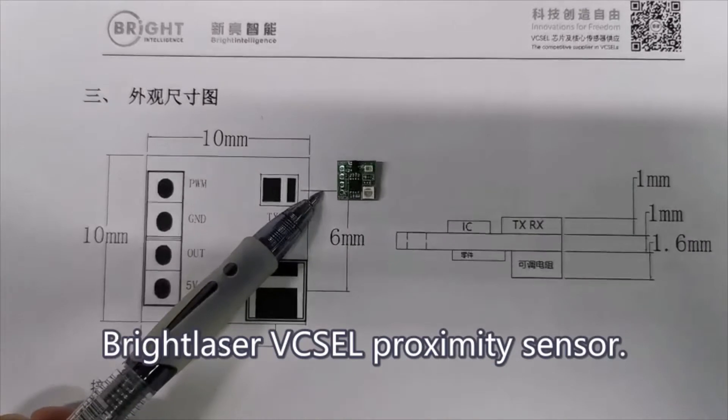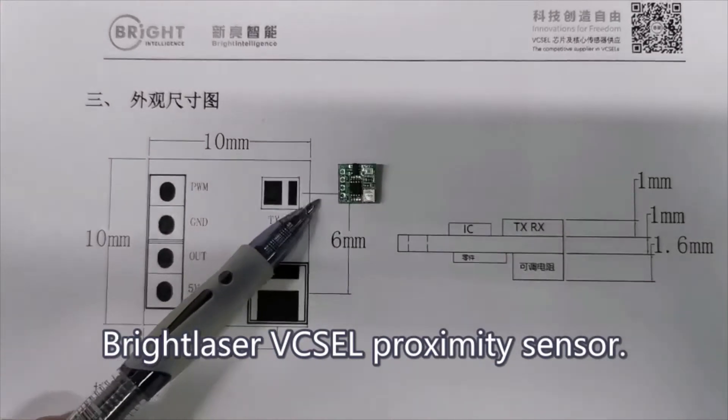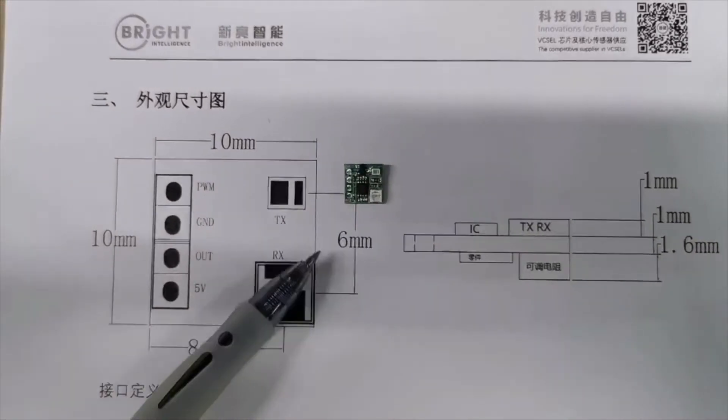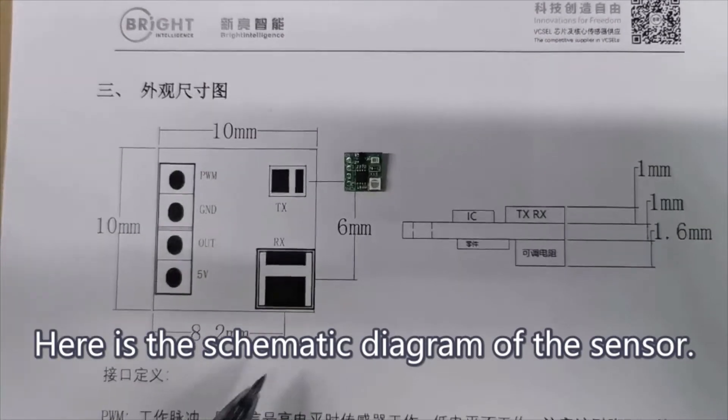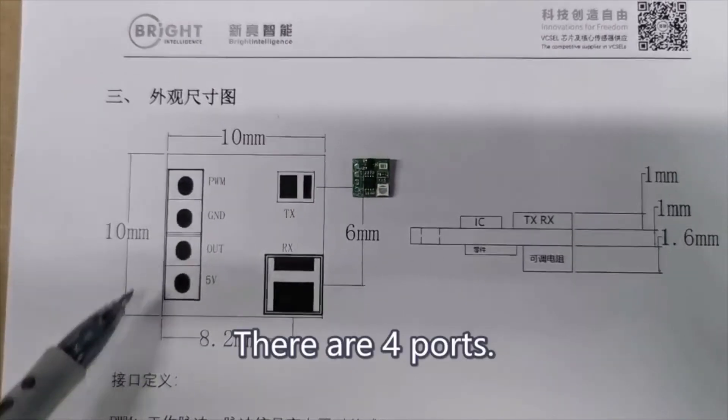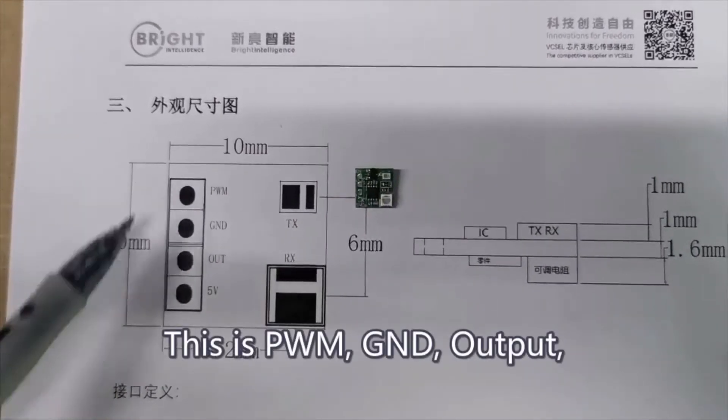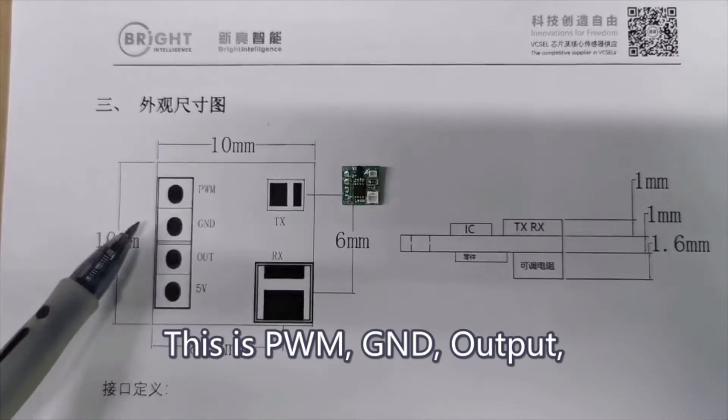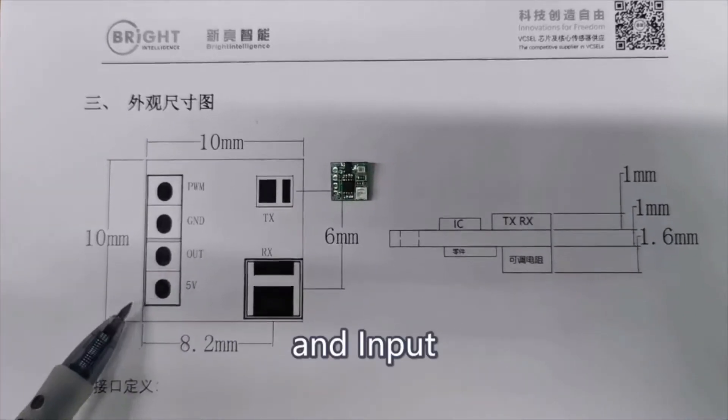Here is our A7-C Brightlaser Visual Proximity sensor. Here is our schematic diagram of the sensor. There are four ports: PWM, ground, output, and input.